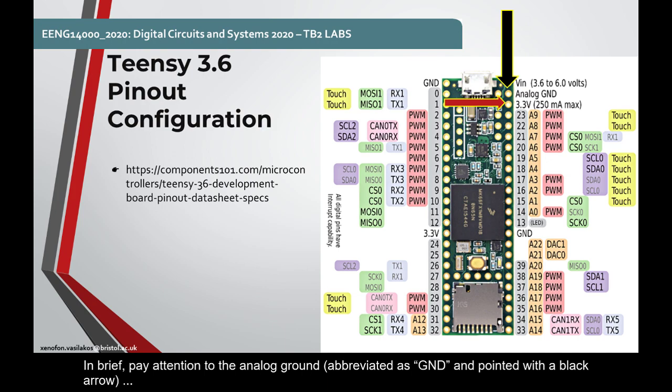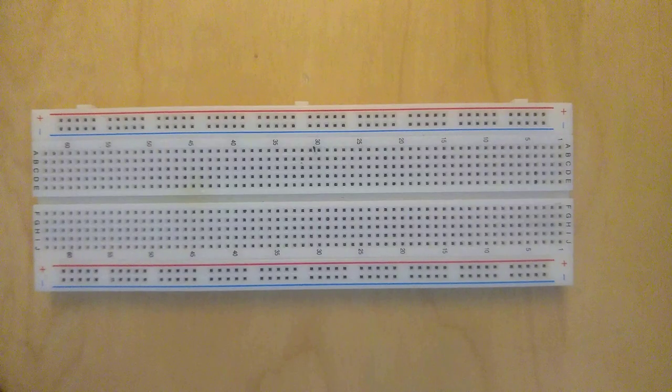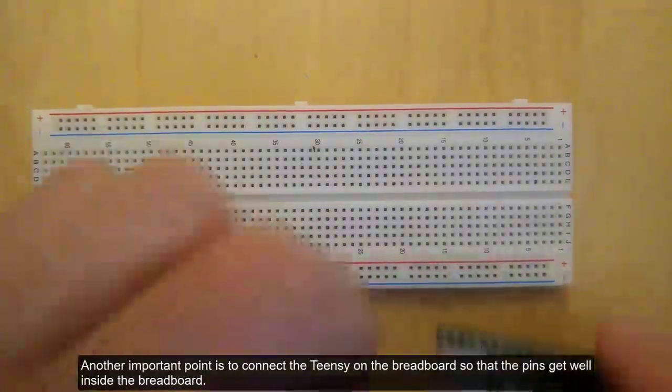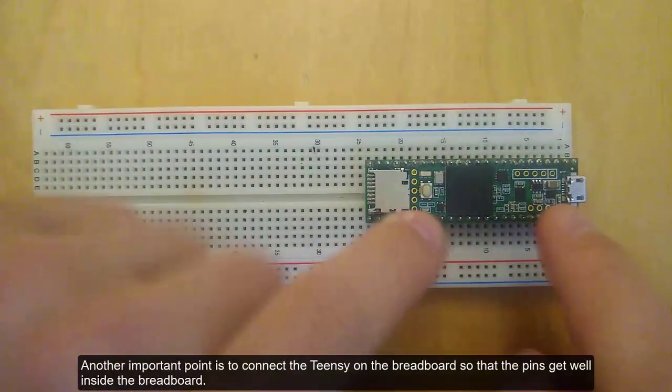In brief, pay attention to the analog ground, abbreviated as GND, and pointed with a black arrow, and the 3.3V output pointed out with a red arrow, which we will be using in combination with other pins in the examples next. Another important point is to connect the Teensy on the breadboard so that the pins get well inside the breadboard.